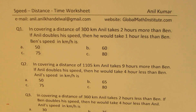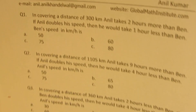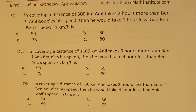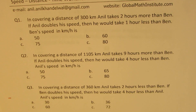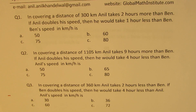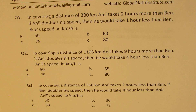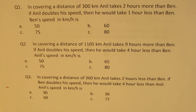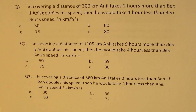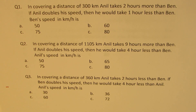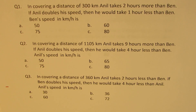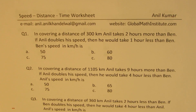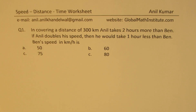Question number three: in covering a distance of 300 kilometers, Anil takes two hours less than Ben. If Ben doubles his speed, then he would take four hours less than Anil. Anil's speed in kilometers per hour is what? So we kind of switch around the situation, but effectively it is the same question. Now let us see how to solve such questions.